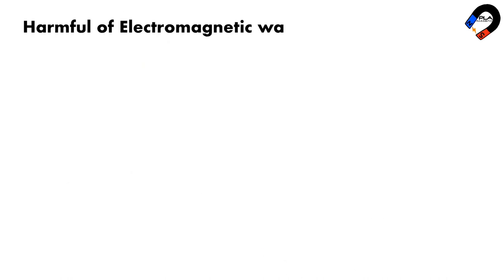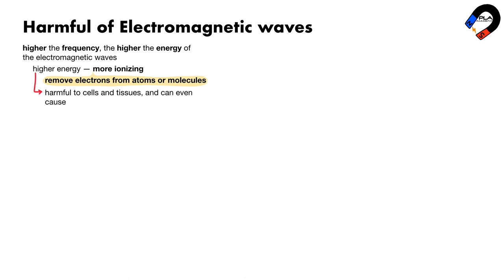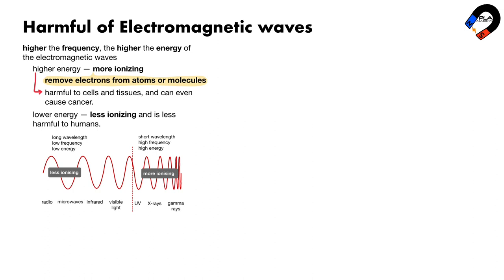Harmful effects of electromagnetic waves on people. The higher the frequency of an electromagnetic wave, the higher its energy. Electromagnetic waves with higher energy are more ionizing, meaning they can remove electrons from atoms or molecules. This can be harmful to cells and tissues and can even cause cancer. Electromagnetic waves with lower energy are less ionizing and less harmful to humans, though they can still be harmful if absorbed in large amounts. Beyond the visible part of the spectrum, the energy becomes large enough to ionize atoms.